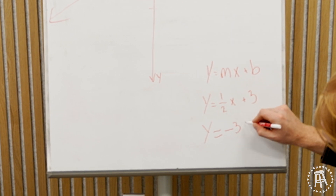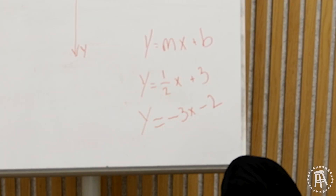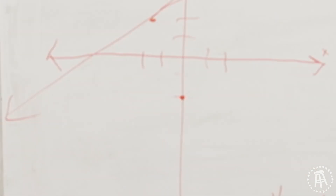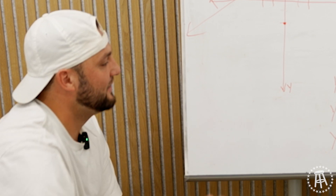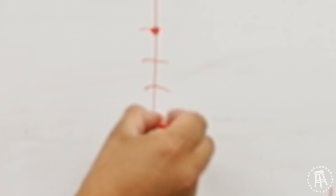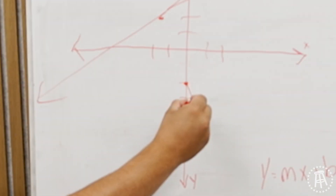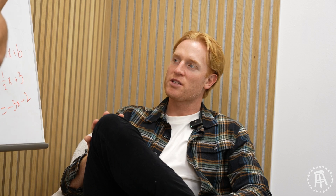Y equals negative 3X minus 2. Try that on for size. That triple XL right there. That's my Y intercept, right here, baby. And then negative 3X — we're sinking three. And we're running one, so we're going right here. And it's going to be nice and steep.